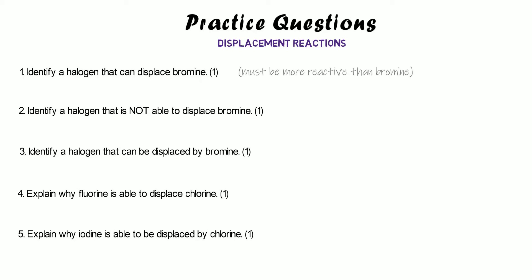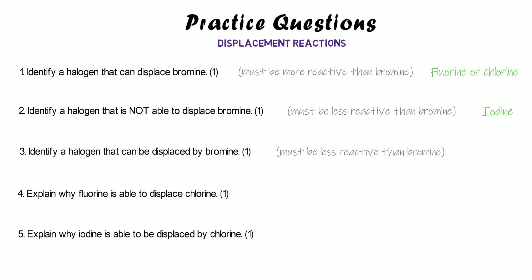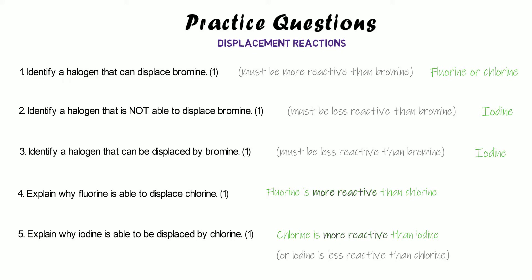For a halogen to be able to displace bromine, it's got to be more reactive than bromine. So you have two choices: either fluorine or chlorine — either one would get you the mark. One that's not able to displace bromine must be less reactive than bromine; the only one is iodine. One that could be displaced by bromine means bromine's got to be more reactive than it, so again the answer is iodine. Fluorine is able to displace chlorine because fluorine is more reactive than chlorine — make it a comparison, not just 'it's reactive'. And iodine is able to be displaced by chlorine because chlorine is more reactive than iodine, or equivalently, iodine is less reactive than chlorine.